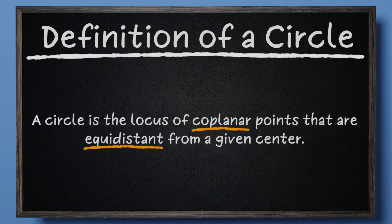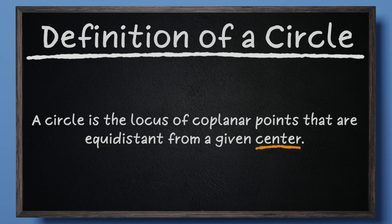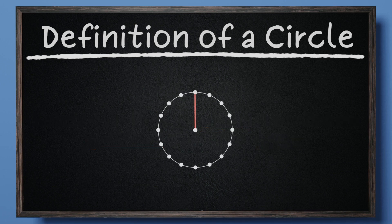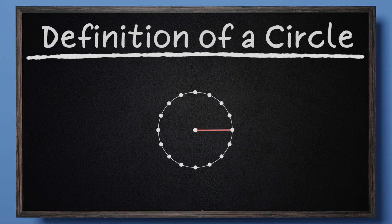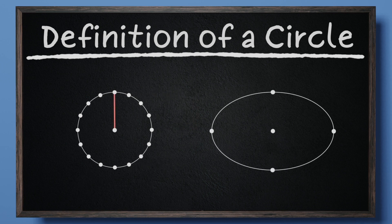Combining what we know about coplanar points and equidistance, let's review how these words relate to the center of a circle. Each point along a circle is an equal distance away from the center, the location that is in the middle of the circle. This portion of the definition is very important for distinguishing circles from just any ellipse.